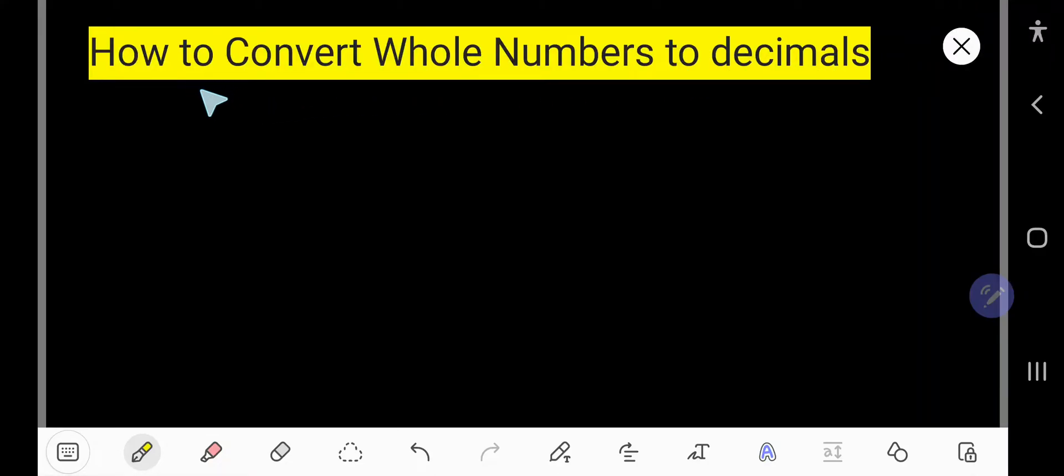From this video you will learn how to convert whole numbers to decimals. Let's say 3 is a whole number and you need to convert this whole number to decimal. So just you have to write that whole number.